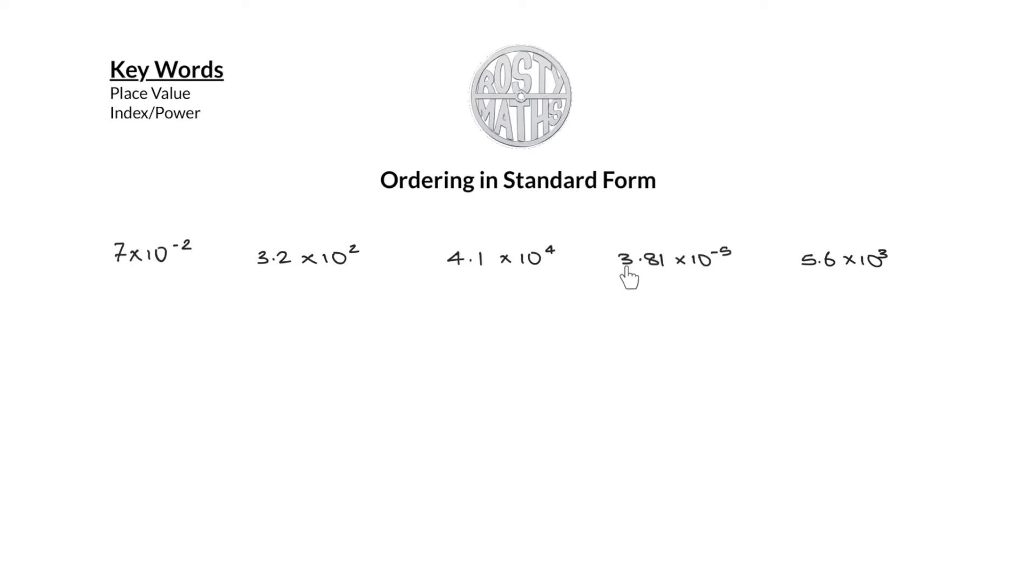So that's why I would start with this number here. Look at the powers, I'll put little numbers above them so this is going to be my first number here. Look at the powers again, you're going to use your powers from smallest to biggest. This is going to be the next one here because negative two is bigger than negative five, so therefore that's going to be my next one.